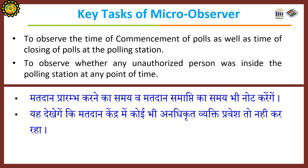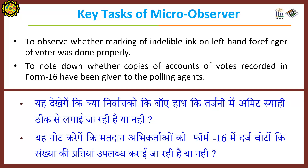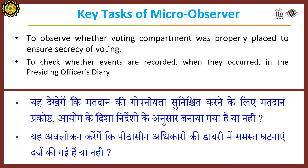Further key tasks include observing the time of commencement and closing of polls, observing whether any unauthorized person was inside the polling station at any point, checking whether marking of indelible ink on the left-hand forefinger of the elector was done properly, noting whether copies of the account of votes recorded in Form 16 were given to polling agents, observing whether the voting compartment was properly placed to ensure secrecy of voting, and checking whether events were recorded in the presiding officer's diary when they occurred.